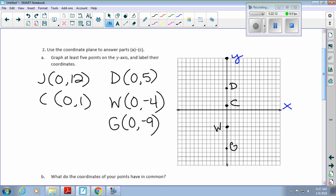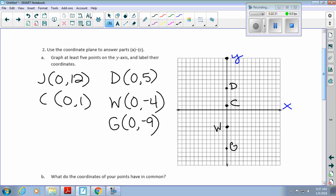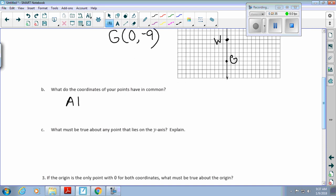Any questions on this? What do we notice about all of these points? What do they have in common? All of the x-coordinates are zero. What must be true about any point? We could go on all day, as long as you had the x-coordinate of zero. It says if the origin is the only point with zero for both coordinates, what must be true about the origin? It's the only point on both axes. It is the point of intersection for the x- and y-axis.